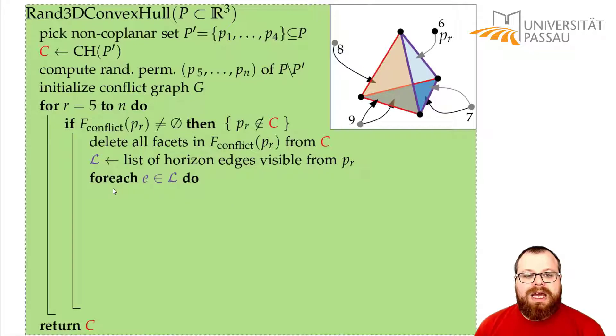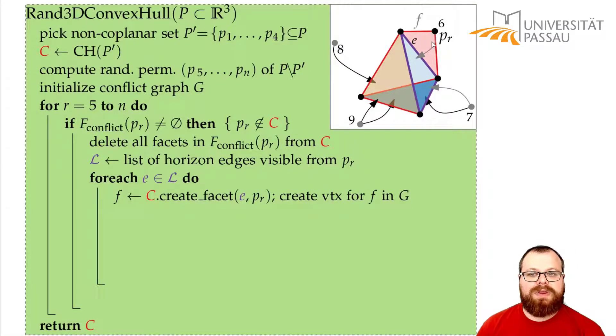Now, for every edge here on the horizon, we have to create a new triangle with our point PR. So we have to create a new face and then update the data structures. Well, let's pick one edge, for example this one here, and we create a new face F with our point PR by the edge E and the point PR. And in the conflict graph, we also create a vertex for this face.